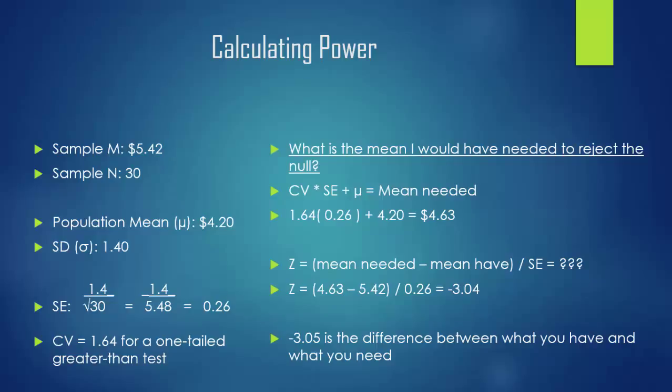To answer the question, what is the mean I would have needed to reject the null, you have to multiply the critical value by the standard error and then add the population mean. That will give you the mean needed in order to reject the null. For our example, that is going to be 1.64 times 0.26 plus 4.20. That gives us an answer of 4.63.